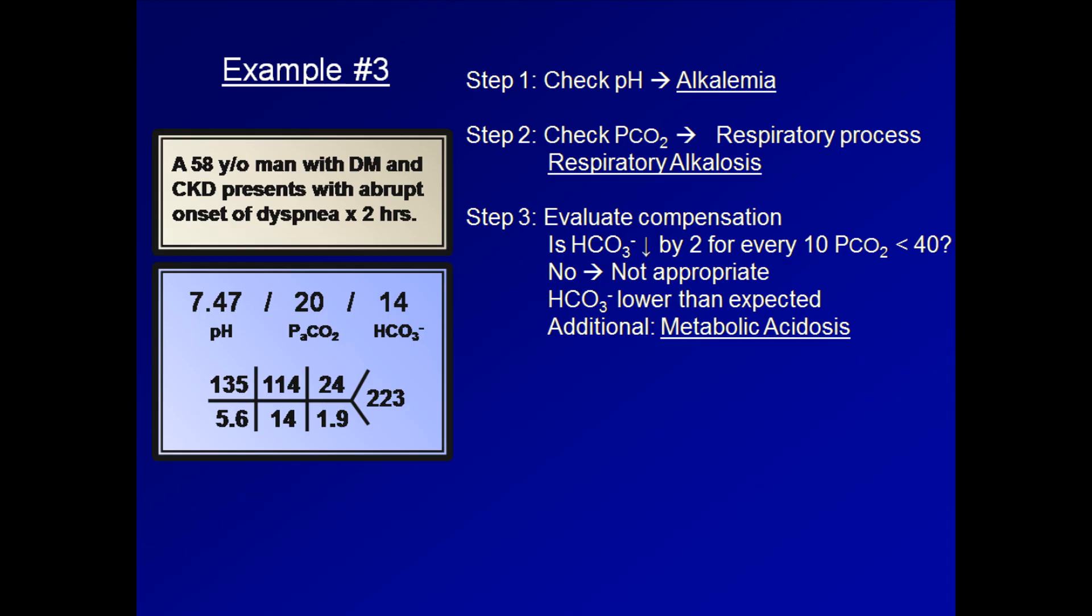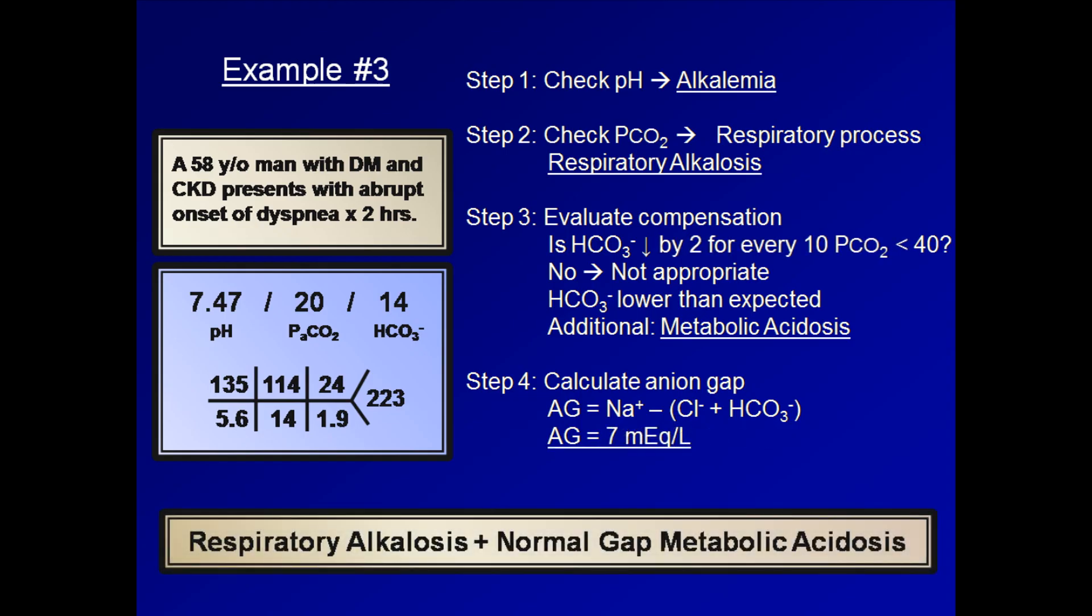It's important to note that this metabolic acidosis just identified is not just compensation for the respiratory alkalosis that we first identified, but rather an independent primary acid-base disorder. For step number four, let's calculate the anion gap. 135 minus the sum of 114 and 14 is 7. In summary then, this patient has a respiratory alkalosis and a normal gap metabolic acidosis.